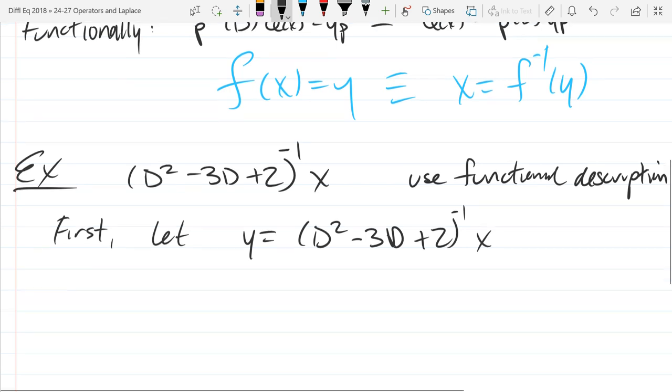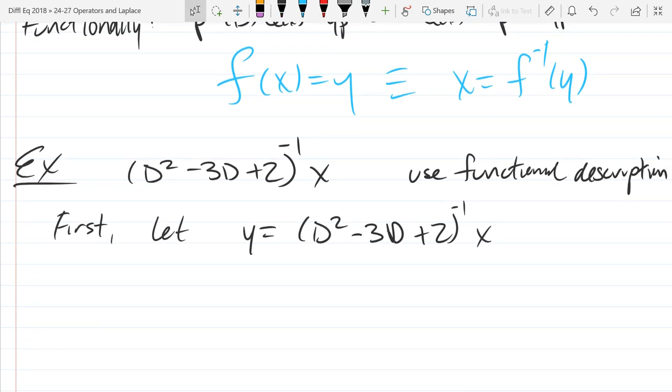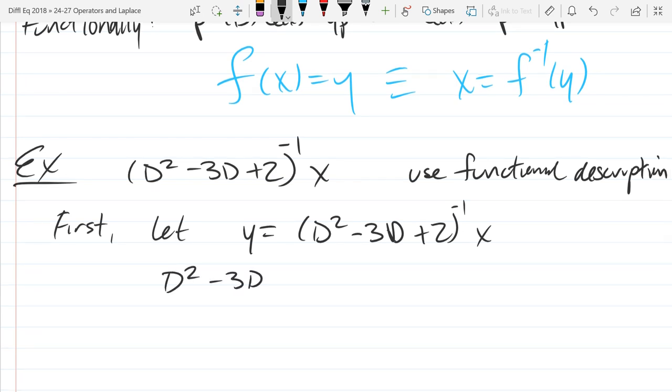Alright, so y equals this stuff. How do I move the operator to the left side? You just move it over and make the power not negative. Yep, so just invert it basically. So it moves over as (D squared minus 3D plus 2) y equals x. So that's how we move it to the other side. You know how to apply this derivative operator now. This is just like last section. So apply this. It should be pretty quick.